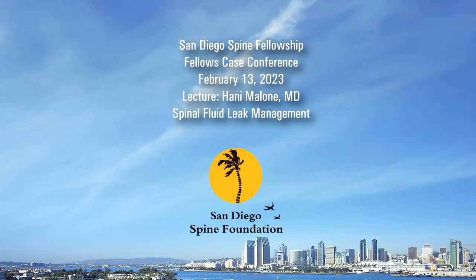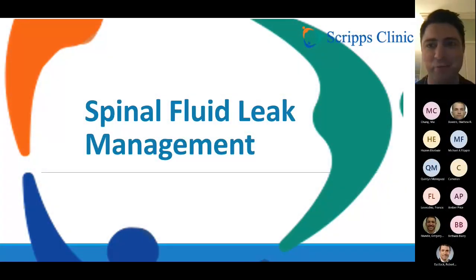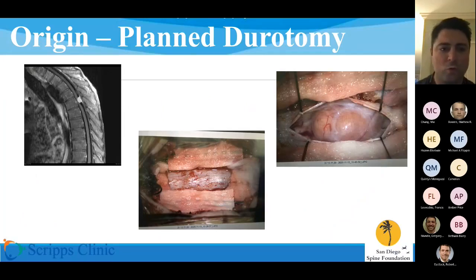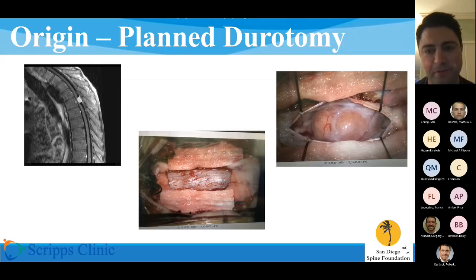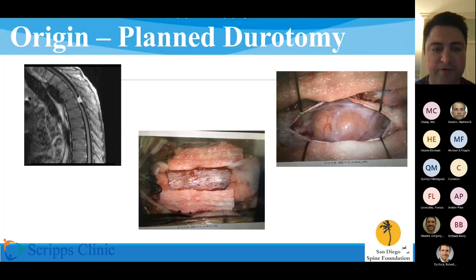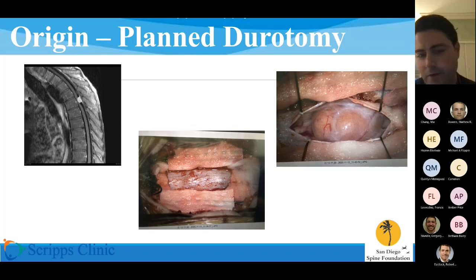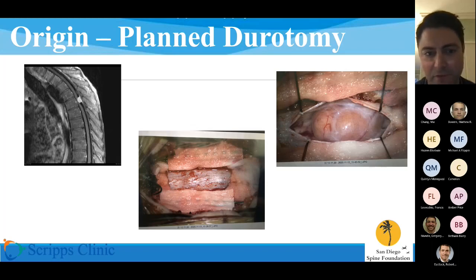This talk is on spinal fluid leak management — a topic that isn't anyone's favorite, but nevertheless very important. There are obviously different dural issues. There's the planned durotomy, which you do in the context of intradural pathology — a very different animal than the iatrogenic durotomy you're not planning to do, but a lot of the same principles apply. What I think of when I have an unplanned durotomy uses the same fundamentals we learned when closing planned durotomies.